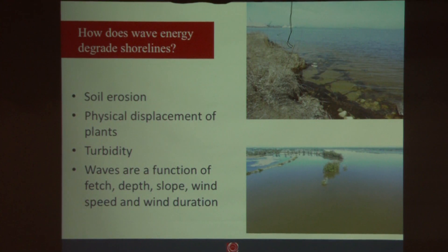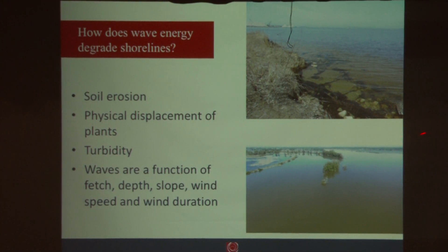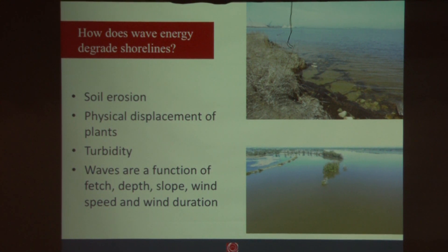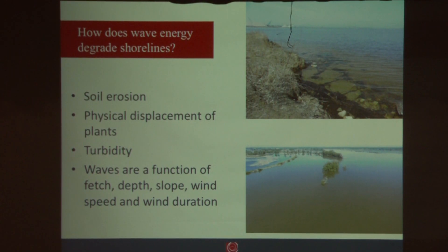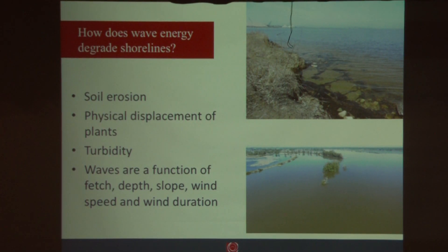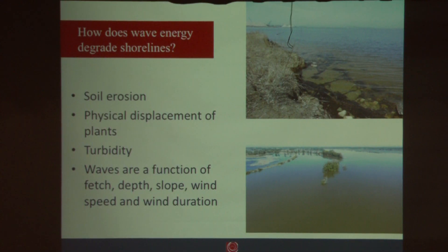One thing people don't often consider is turbidity. That act of soil erosion and wave action can continually stir up sediment, especially when you have silts, clays, and fine sediments along the lakeshore. When you get a lot of turbidity, it actually limits the ability of plants to grow within the lakeshore itself, and ultimately that takes away habitat for fish, amphibians, and everything else that uses the lakeshore.